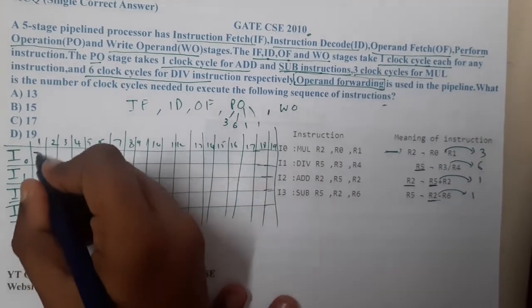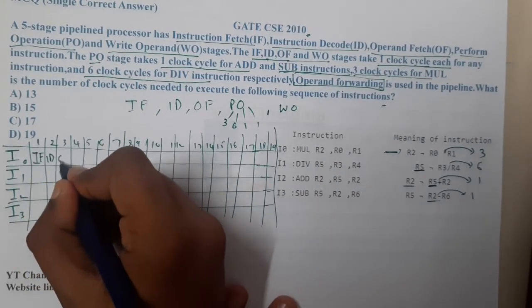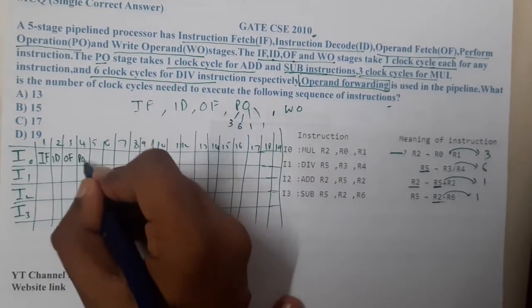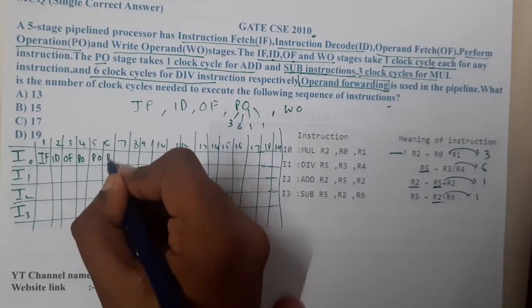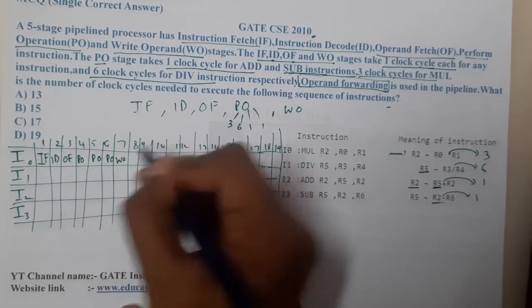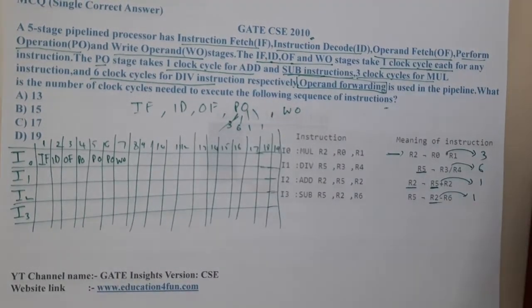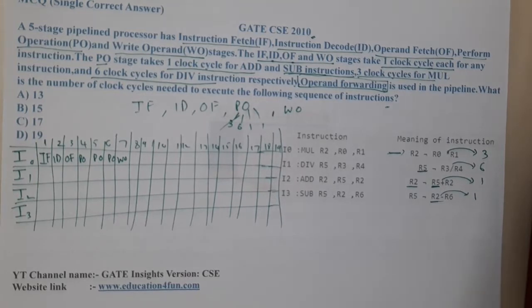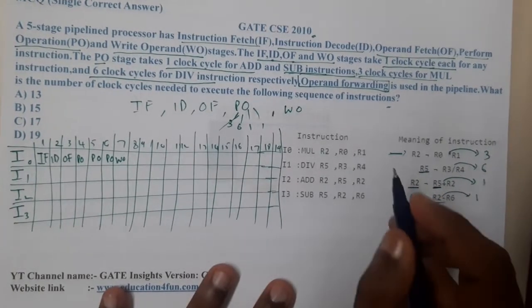So I0 executes: IF, ID, OF, then three PO stages (PO, PO, PO) for multiplication, then WO. I0 runs smoothly without any stalls. Always remember that I0 will never have any issue — it runs really smoothly.